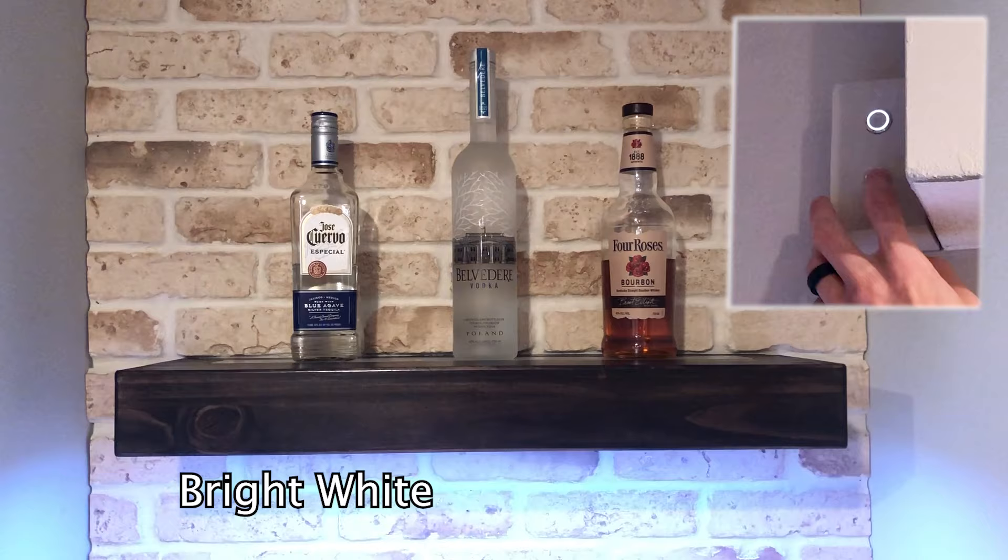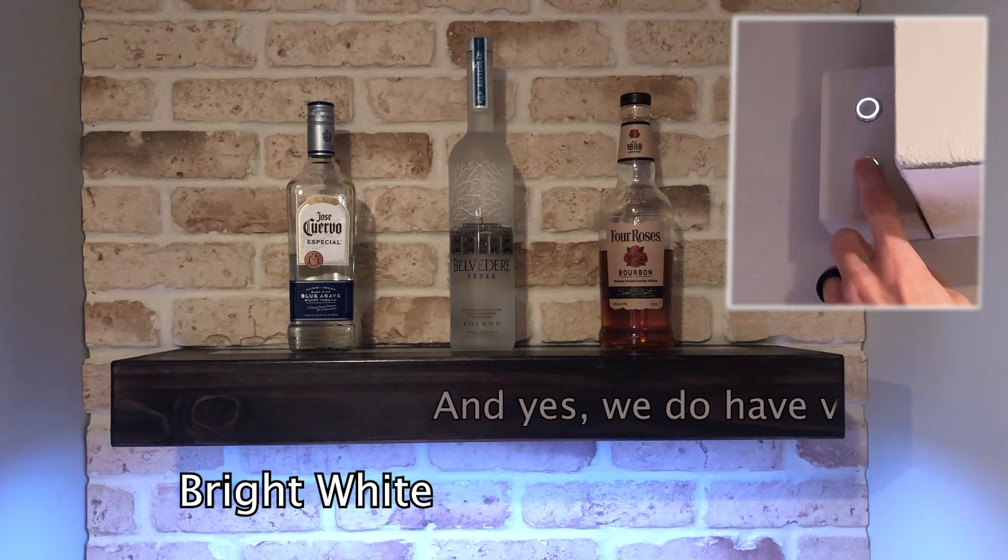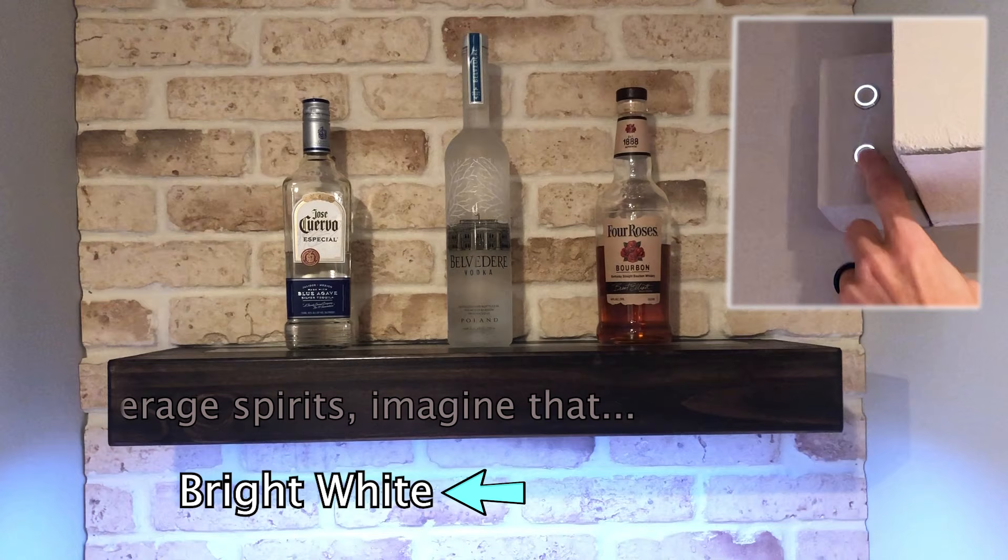At the time of uploading this, each button will cycle through two different color options for the respective LED strip. So for the down lights it's a bright white and then a dimmer warmer white, and then a long press will turn it off.